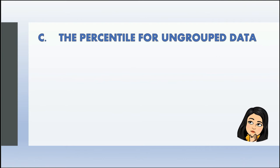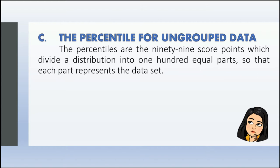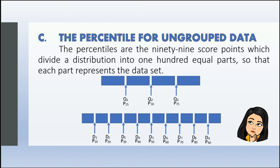Lastly, we have the percentile for ungrouped data. The percentiles are the 99 score points which divide a distribution into 100 equal parts, so that each part represents the dataset. Comparing to quartiles: Q1 = P25, Q2 = P50, Q3 = P75. Comparing percentile to decile: D1 = P10, D2 = P20, D3 = P30, D4 = P40, D5 = P50, D6 = P60, D7 = P70, D8 = P80, and D9 = P90.